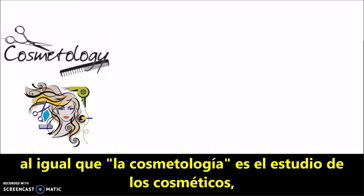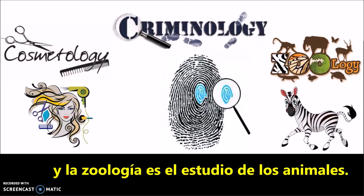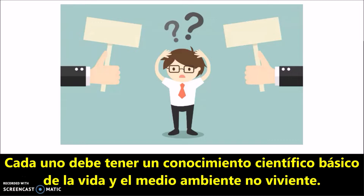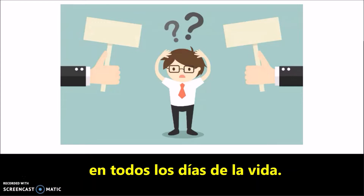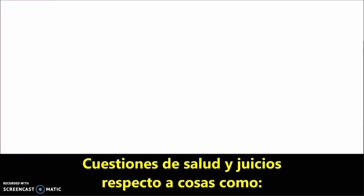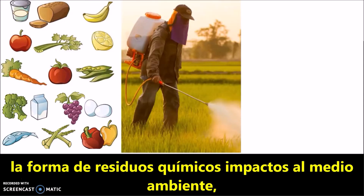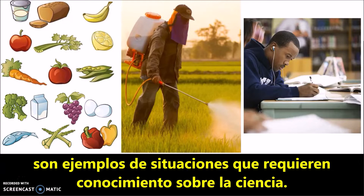Just like cosmetology is the study of cosmetics, criminology is the study of the criminal mind, and zoology is the study of animals. Everyone should have a basic scientific knowledge of their living and non-living environment. This is necessary because it is important to be informed when making important decisions in everyday life. Health questions and judgments concerning things like what types of foods to eat, how chemical waste impacts the environment, or how music affects concentration are examples of situations that require knowledge about science.